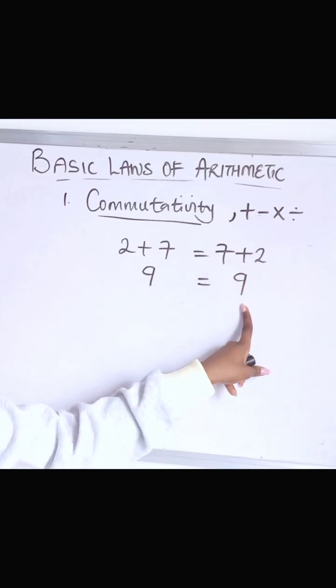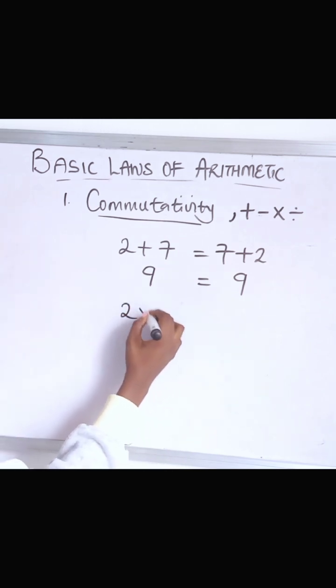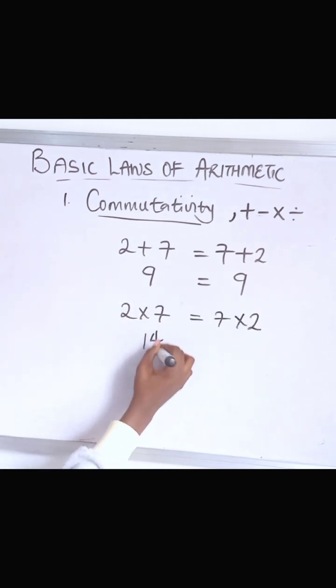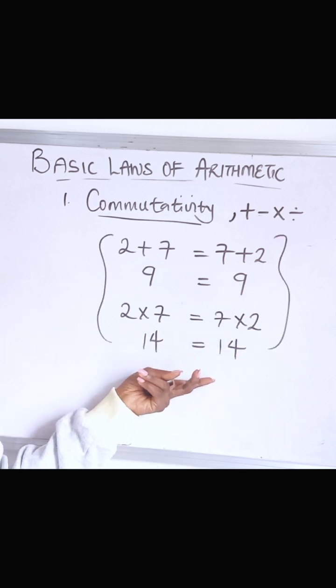If you reverse it under the same operation, they get the same answer. That's what it's trying to say. Let's try multiplication. So 2 times 7 is 14, it's the same as saying 7 times 2. This is basically telling us